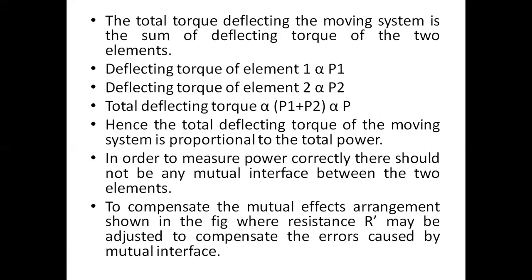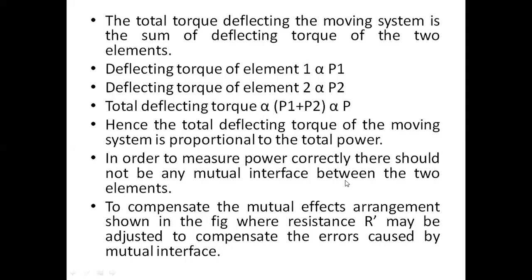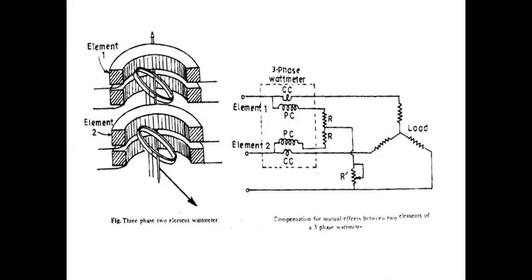In order to measure power correctly, there should not be any mutual interference between the two elements. To compensate for mutual effects, a resistance R can be adjusted as shown in the figure to compensate the error caused by the mutual interference. By adjusting the resistance value R, we can compensate for the mutual interference. This is the construction and working of the three phase watt meter.